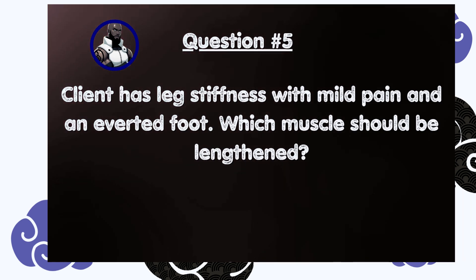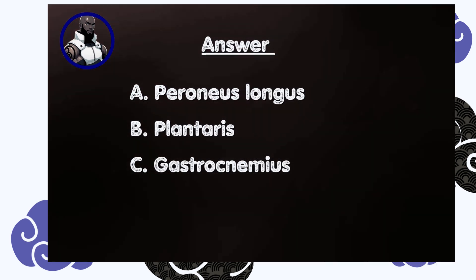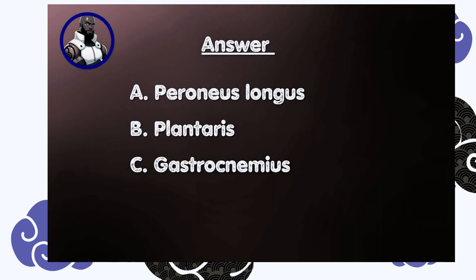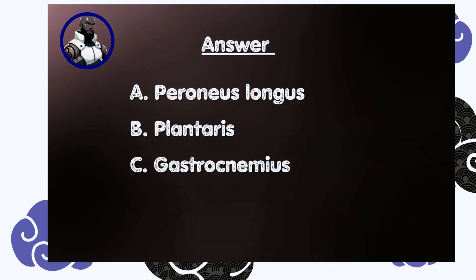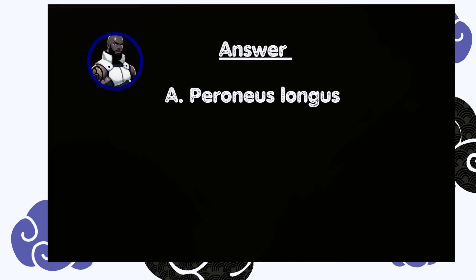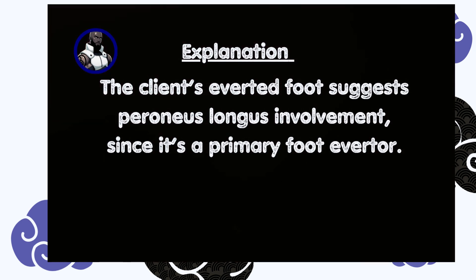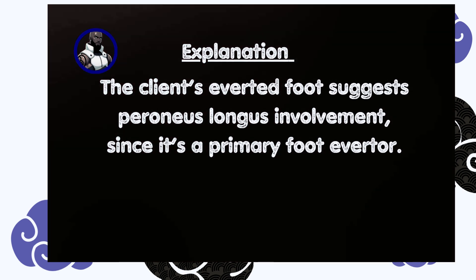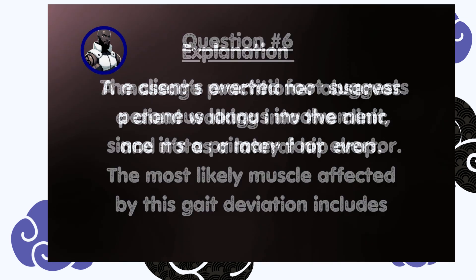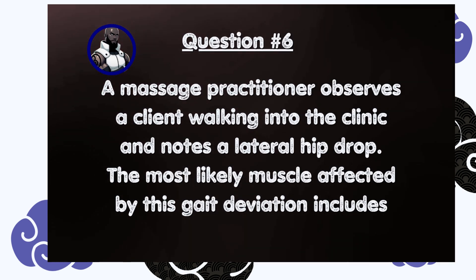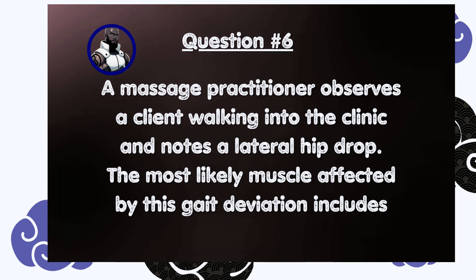Question number five: a client has leg stiffness with mild pain and an averted foot. Which muscle should be lengthened? A) Peroneus longus, B) Plantaris, C) Gastrocnemius. Answer is A, peroneus longus. The client's averted foot suggests peroneus longus involvement, since it is a primary foot evertor.